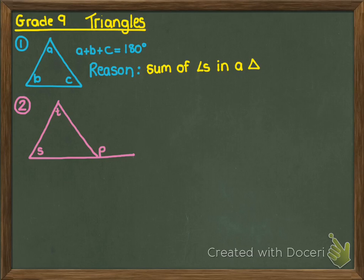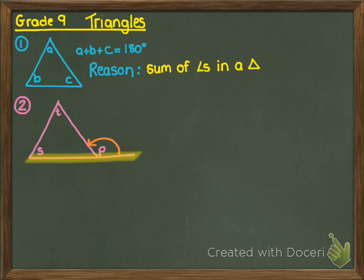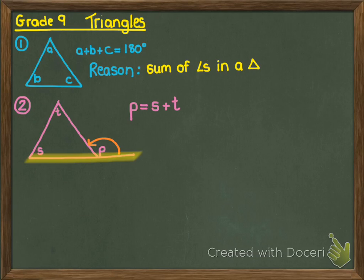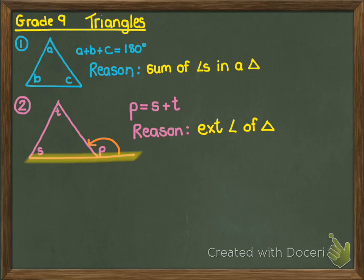Now let's look at number two. If you have a triangle and you extend one of the sides, that angle is called an exterior angle of a triangle. The angle it forms towards the triangle is called the exterior angle. The exterior angle, in this case P, is always equal to the sum of the two angles inside the triangle on the opposite side. So P will equal S plus T. The reason we use is: exterior angle of triangle.